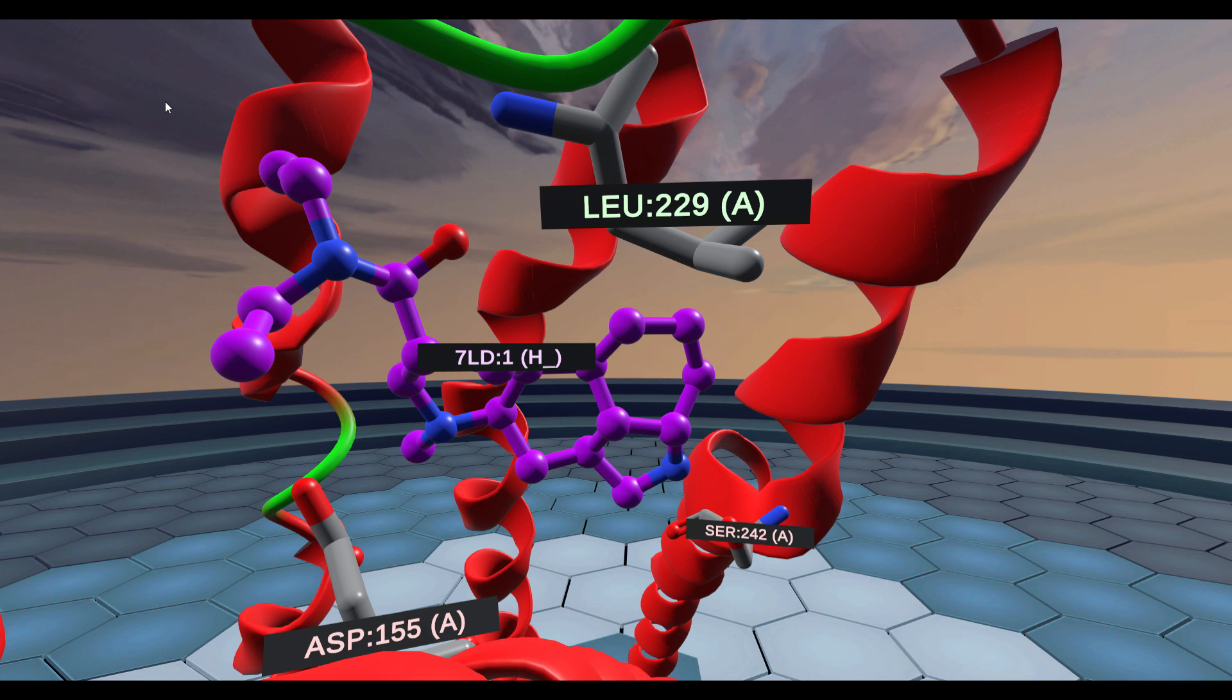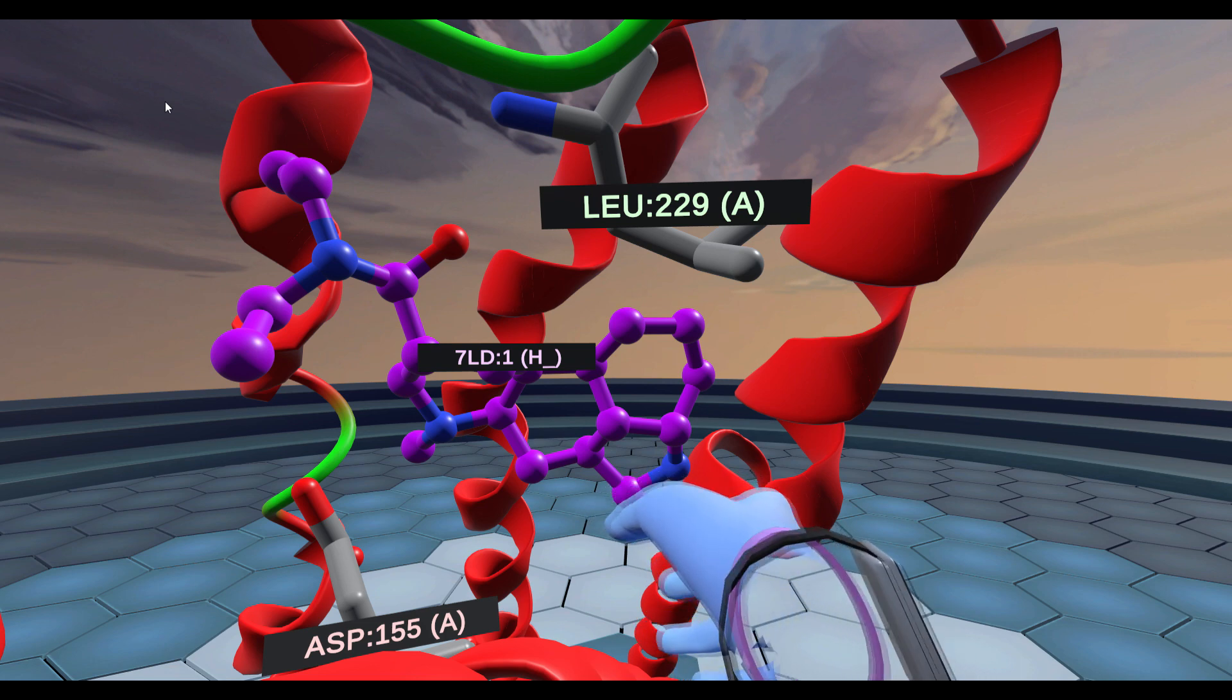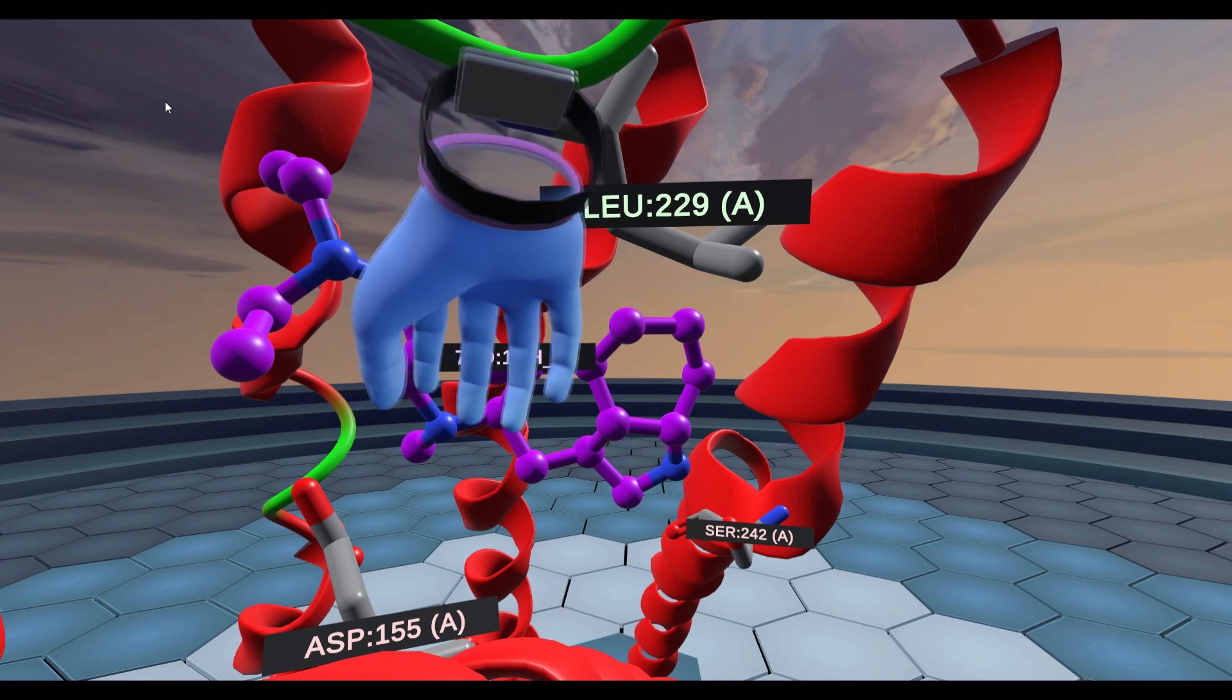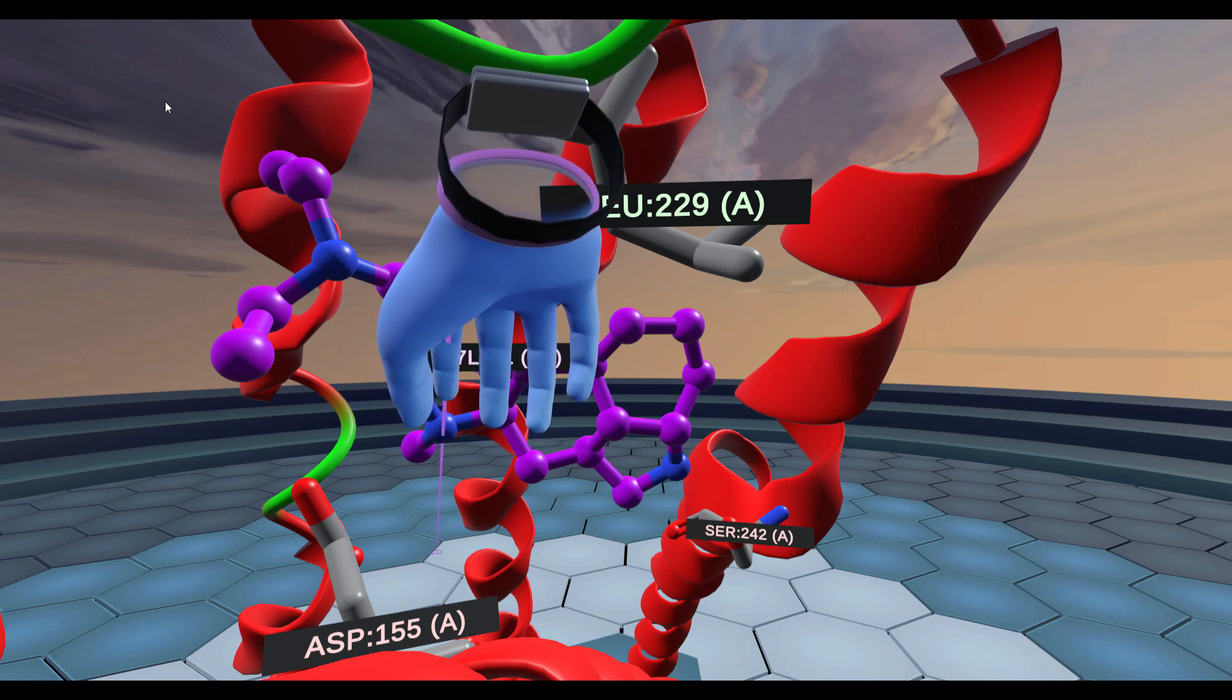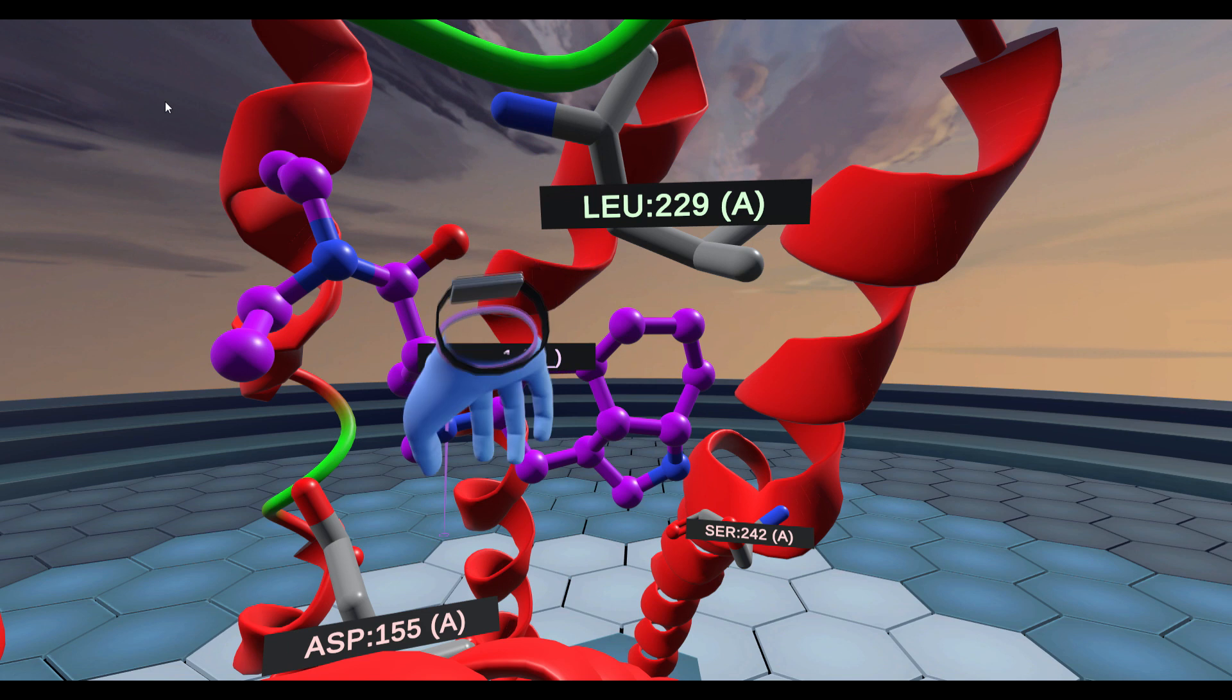A few of them that are important are serine 242, right here. There's actually a hydrogen bond that forms between LSD and serine 242. There's additionally a salt bridge that occurs between this positive recharged amine group and the negative charge on aspartic acid.